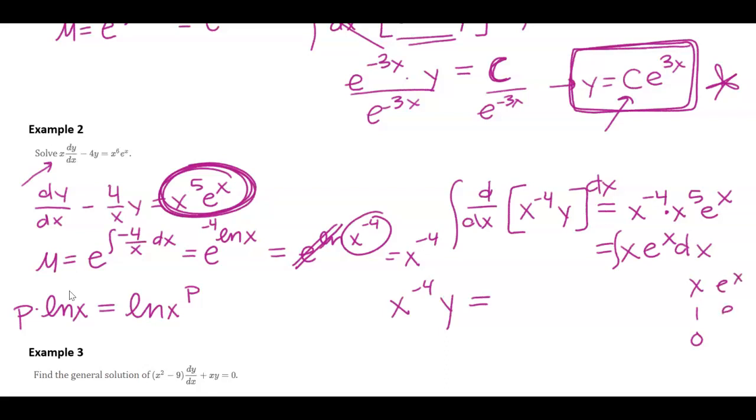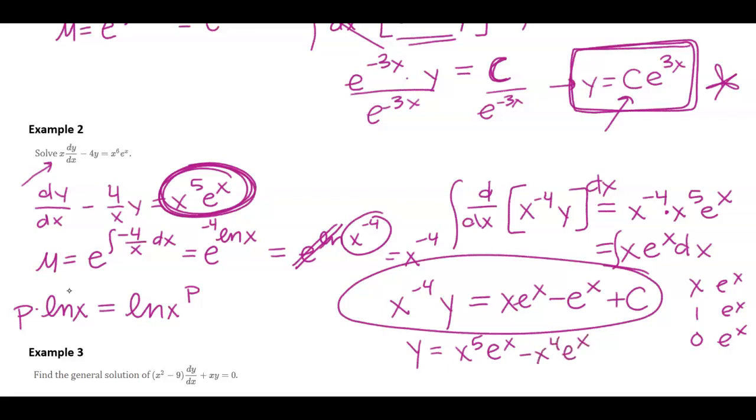So x e to the x minus e to the x. Here we do need that integrating constant plus c. And then I could multiply through by x to the fourth for a final answer. And either of those would be perfect. I do want to make sure I go back and check, but I do know that x cannot be equal to 0 on my domain.